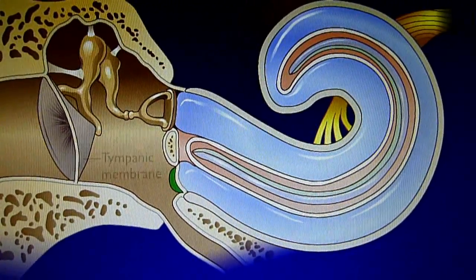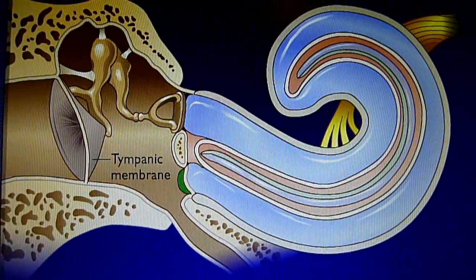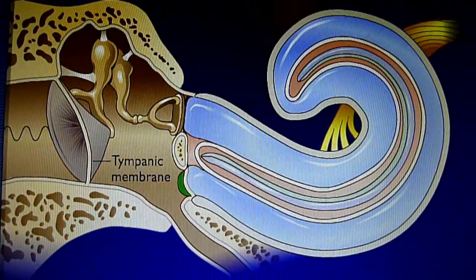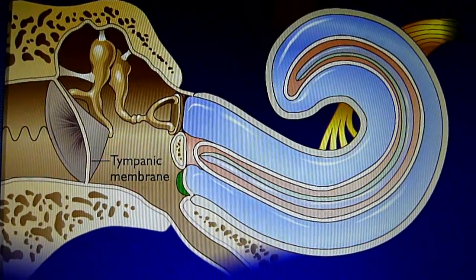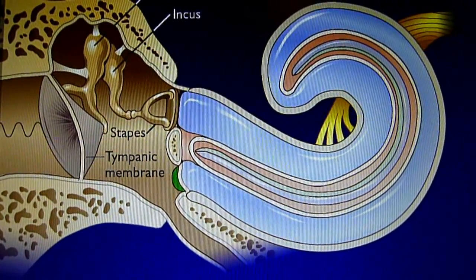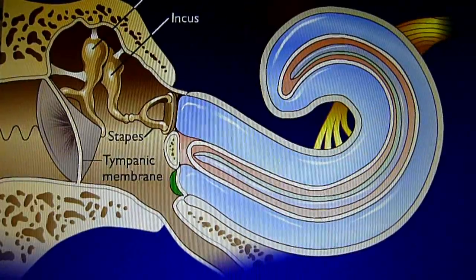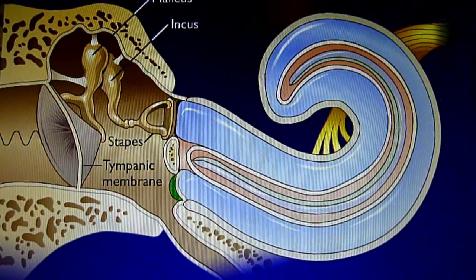Sound waves strike the tympanic membrane and cause it to vibrate. Vibration of the tympanic membrane causes the three bones of the middle ear to vibrate. The footplate of the stapes vibrates in the oval window.